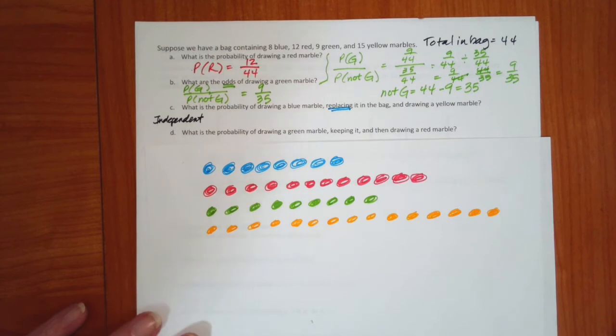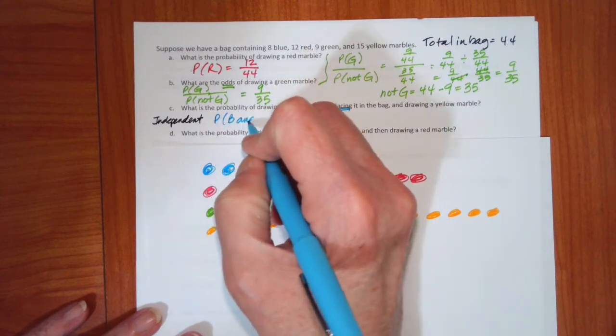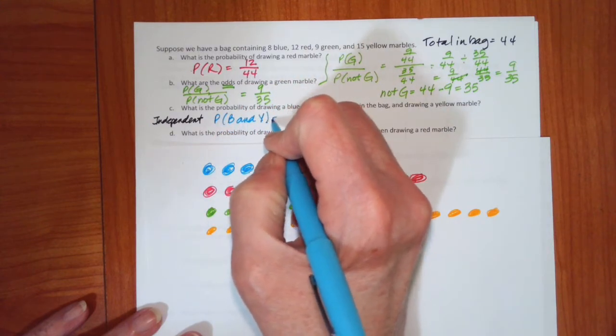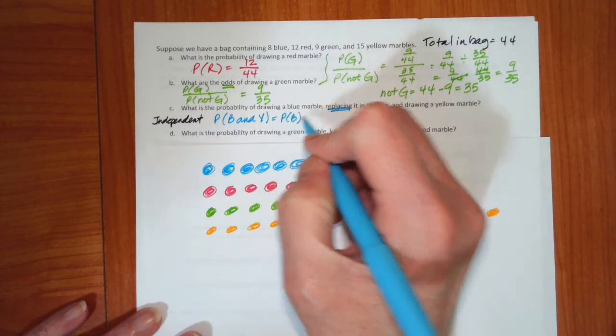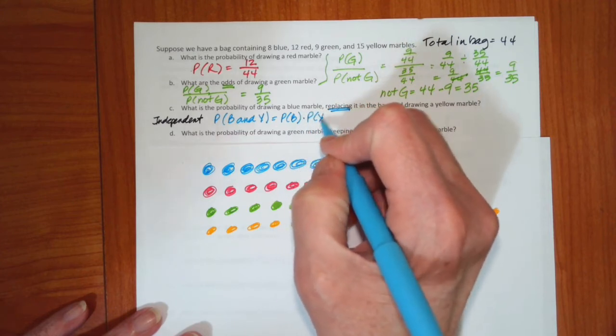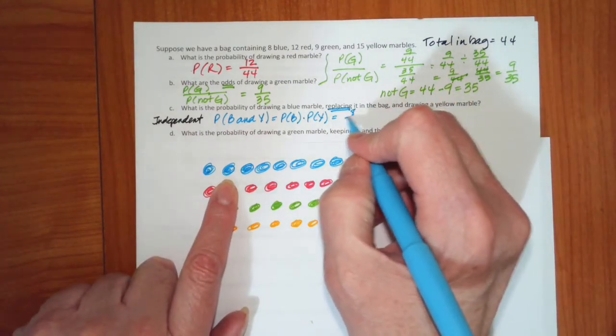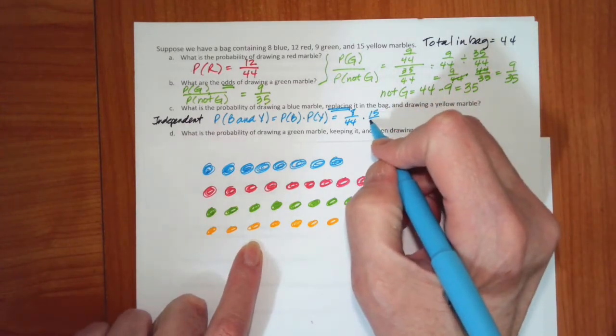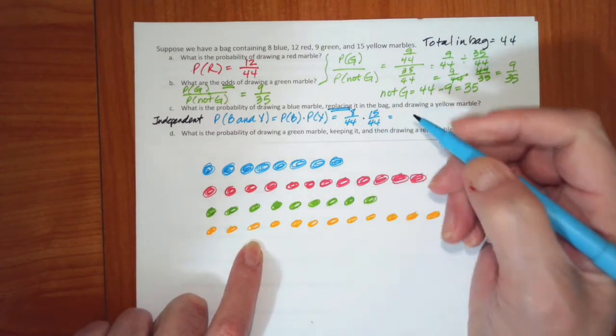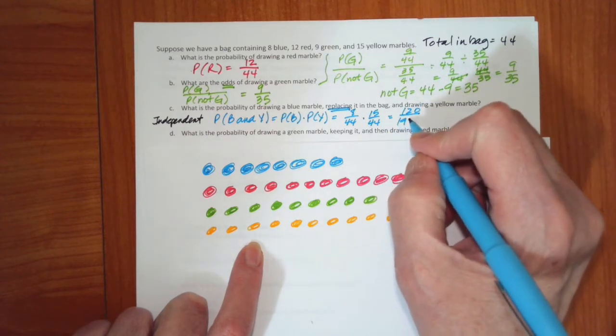We're not changing the bag. So if I want to find the probability of a blue and a yellow, then that is the probability of blue times the probability of a yellow. Okay, so the blue, there are 8 out of 44. Yellow, there are 15 out of 44. If you multiply this, you get 120 divided by 1936.